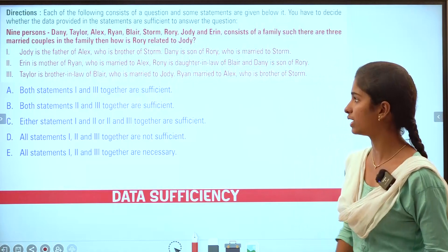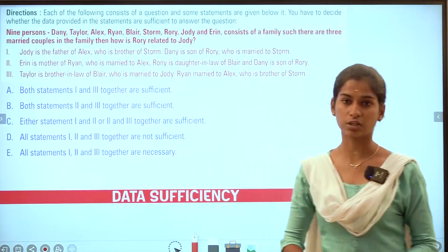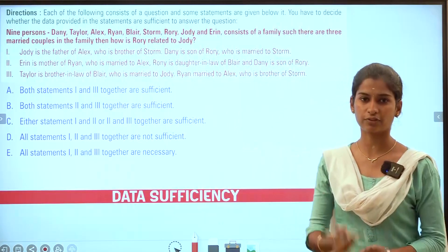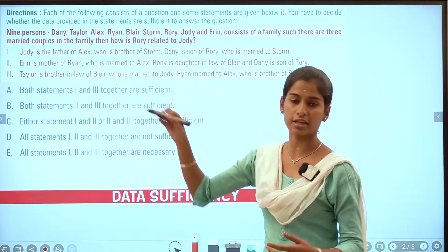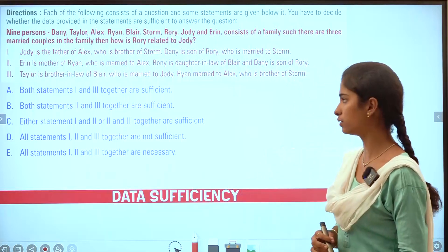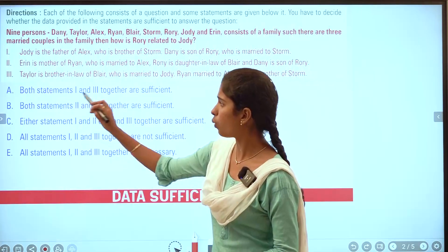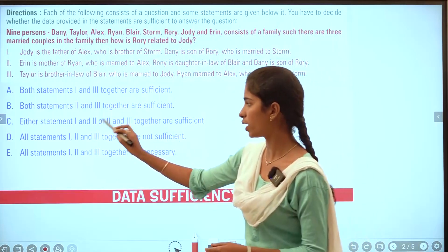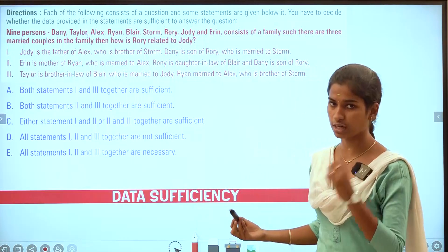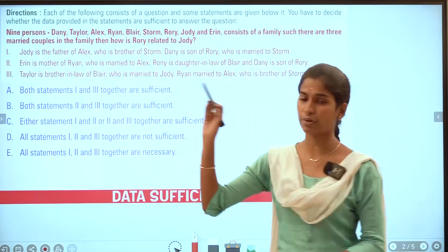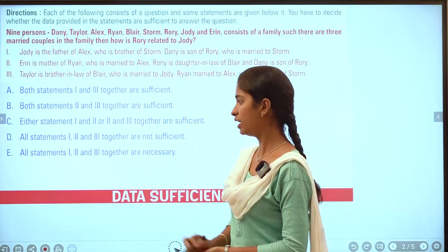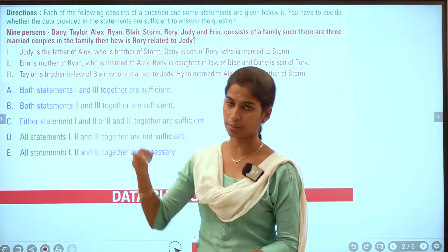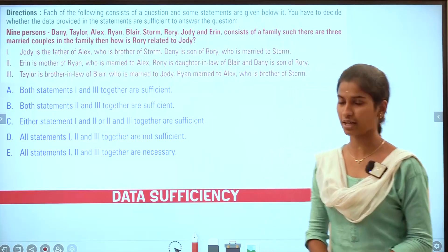Data sufficiency is not one — you can take a question and up to three statements. The options are: both 1 and 2 are true; 1 and 3 together; 2 and 3 together; either 1 and 2 or 2 and 3; or if answering with two statements gives the answer, or all three statements together are needed. If none are sufficient, the answer is not sufficient.